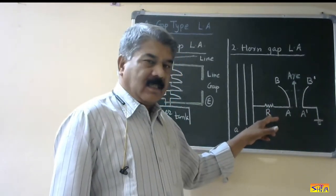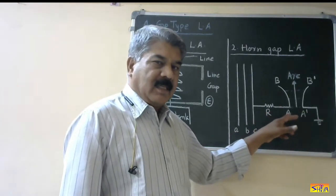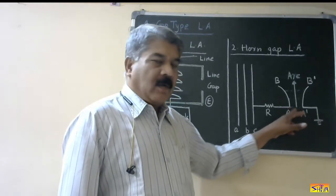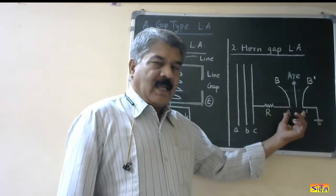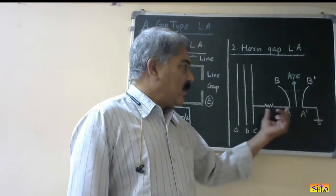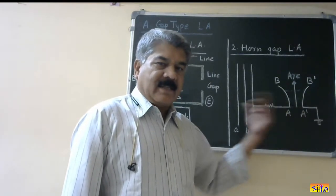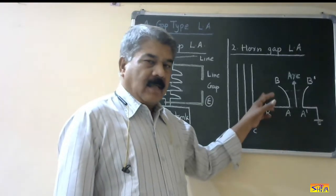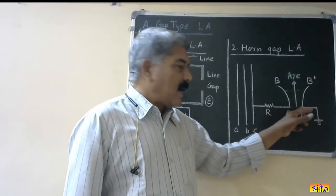The resistance is connected to limit the discharge current which flows after sparkover of the gap. The gap is adjusted in such a way that during normal conditions there is no sparkover, so this acts as an open circuit. Whenever there is a lightning overvoltage, the gap breaks down, sparks over, and the arc is established.